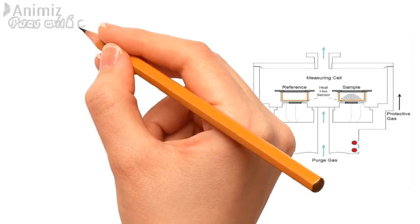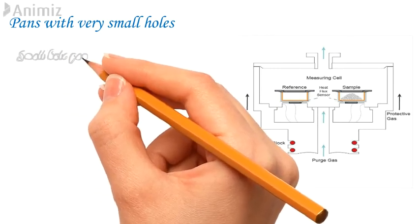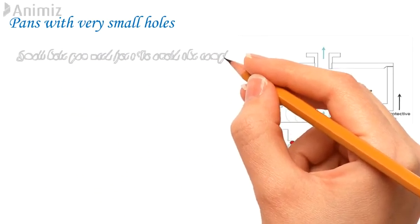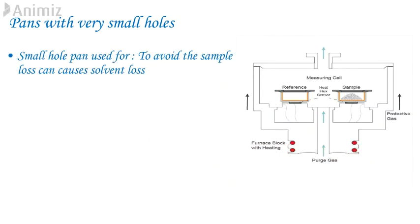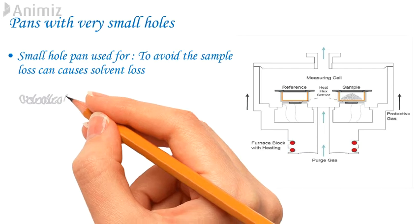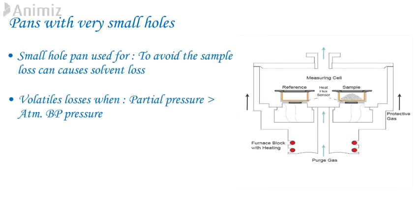6. Pans with Small Holes. Some pans and lids have been developed with small holes, typically about 50 micron diameter, and have found use with hydrated and solvent losses. They can be used with ordinary samples to relieve internal pressure so long as the hole does not block, but are intended to improve resolution of mass loss from sample. As volatiles do not tend to escape through such small holes until the volatile partial pressure exceeds atmospheric pressure, boiling points can be determined.